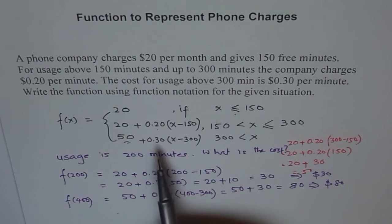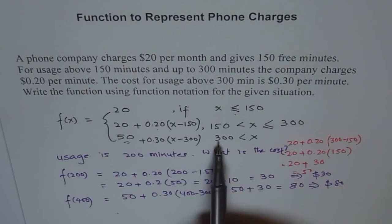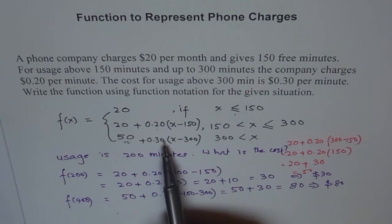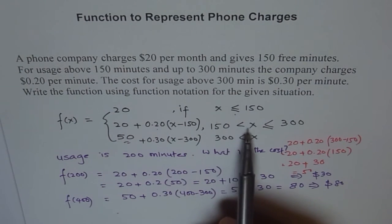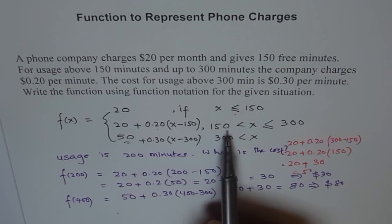And the reason being, that the rate is 30 cents, not 20 cents for every call. For the 100 calls you made, or 100 minutes you used over 300, you paid 10 cents extra, then what you were paying for those 50 calls over 150.